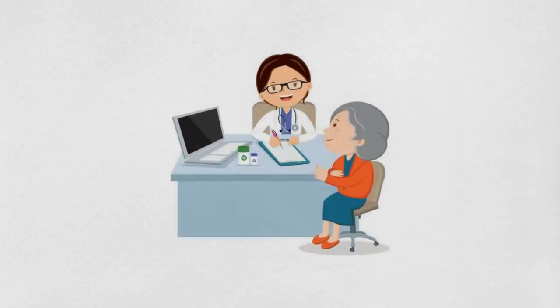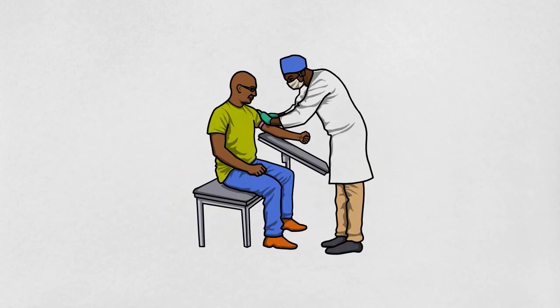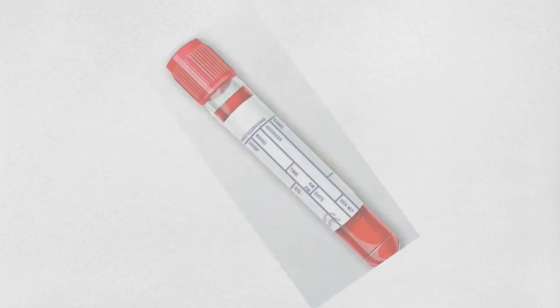When you visit your doctor, they often need to do some tests. Typically, this will involve you attending a pathology collection centre, where a blood collector will take a sample from your arm and place it in a tube.